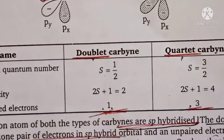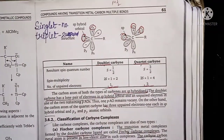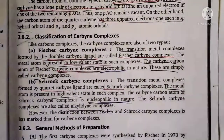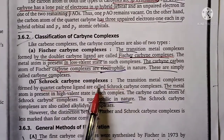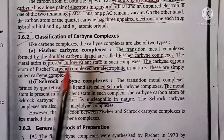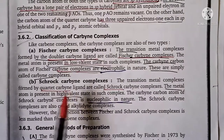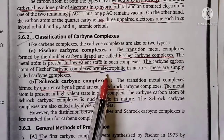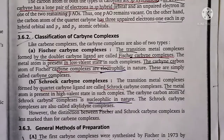After showing the count of unpaired electrons and hybridization, we look at the classification. The carbyne complex has two types: Fischer carbyne complex and Schrock carbyne complex. The Fischer carbyne complex has a doublet carbyne ligand and shows electrophilic behavior, and is low valent. The Schrock carbyne complex has a quartet carbyne ligand and shows nucleophilic behavior, and is high valent.